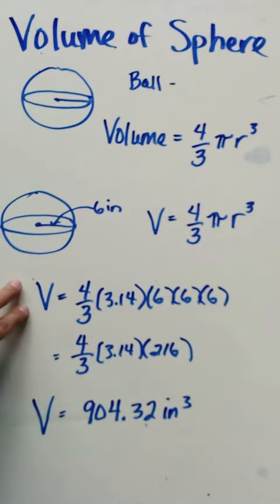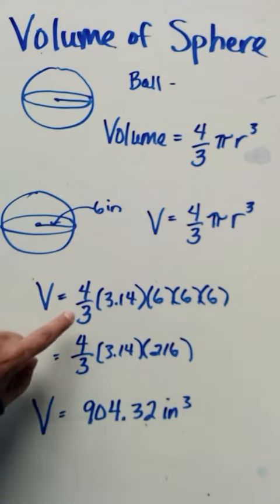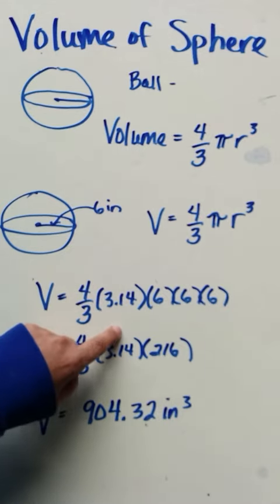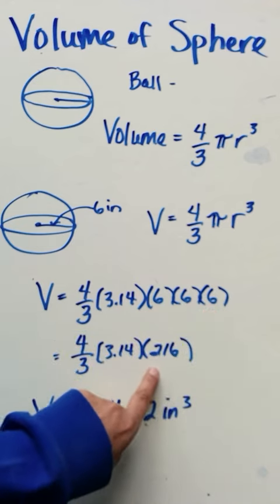So that's our formula, and if I simplify that a little bit, I'll get four-thirds times pi, and six times six times six is 216.